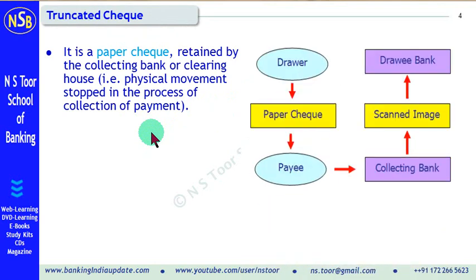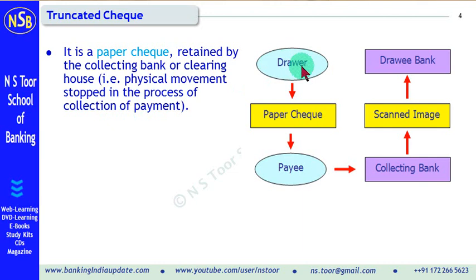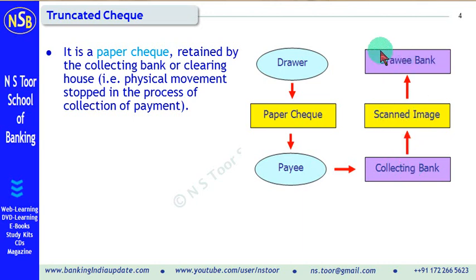Now, what is a truncated check? A truncated check is a paper check which is retained by the collecting bank or clearing house in the process of collection of payment. In other words, the physical movement of the check is stopped. The drawer issues a paper check, which is handed over to the payee. The payee hands it over to the collecting bank, which retains this check with itself. Instead, it sends a scanned image to the paying bank — the drawer's bank — and the drawer's bank makes payment on the basis of this scanned image authenticated by the collecting bank. This paper check is called a truncated check.